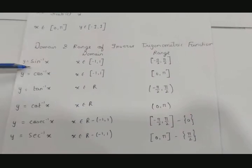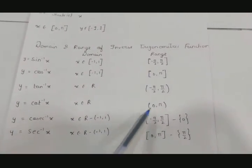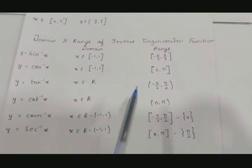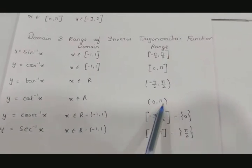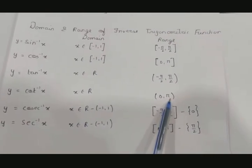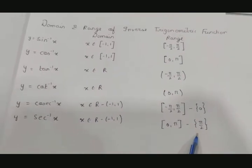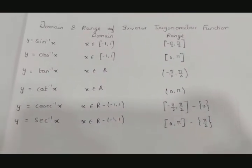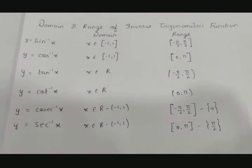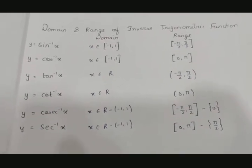For cosec⁻¹x, since cosec is not defined at 0, we exclude 0 from the range. Similarly, cos⁻¹, cot⁻¹, and sec⁻¹ lie in [0, π]. For cot⁻¹, 0 and π are excluded because cot inverse is not defined there. For sec⁻¹, −π/2 is excluded from the middle. These are the domain and range for all six inverse trigonometric functions, which we must always remember for solving any question.